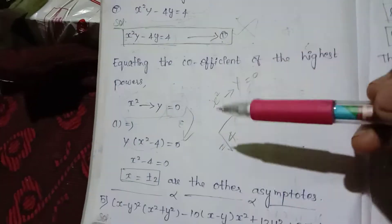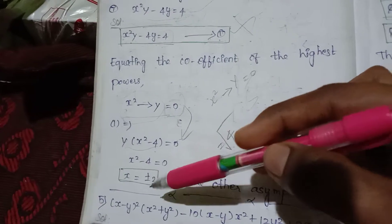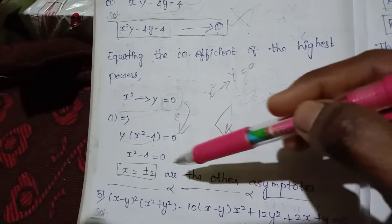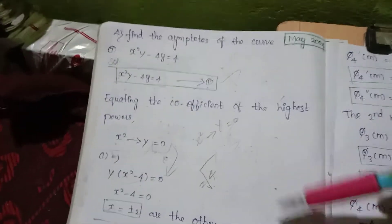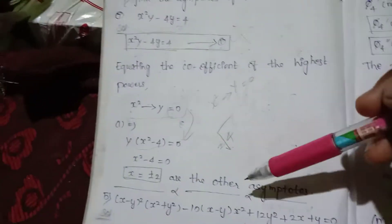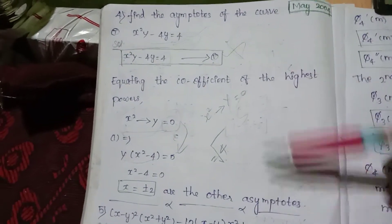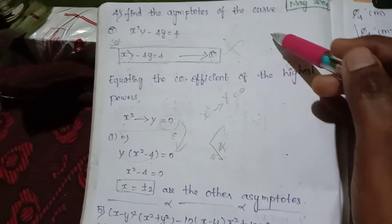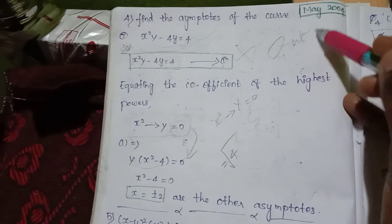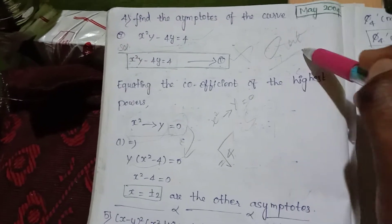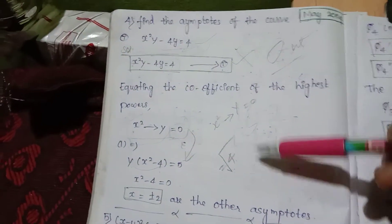x is equal to plus or minus 2 are the asymptotes. This is a very simple step. We will go to the other example.